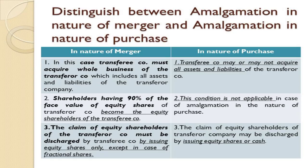What is the difference between amalgamation in nature of merger and amalgamation in nature of purchase? In the nature of merger, the transferee company must acquire the whole business of the transferor company, including all assets and liabilities. But in the nature of purchase, the transferee company may or may not acquire all the assets and liabilities of the transferor company — it is at the will of the transferee company.